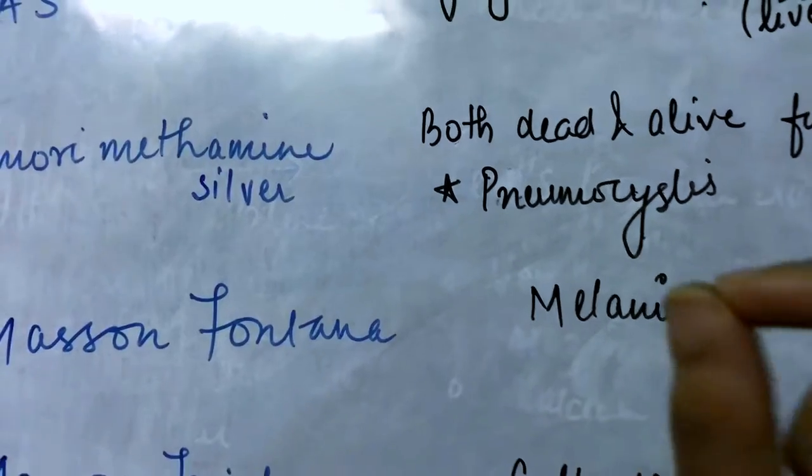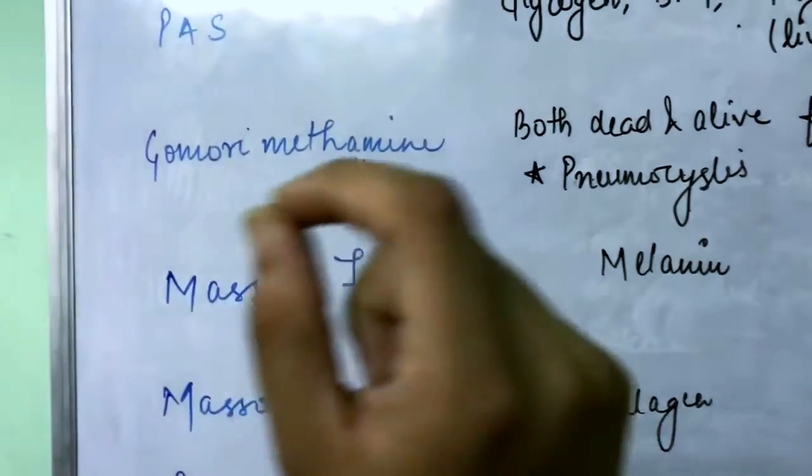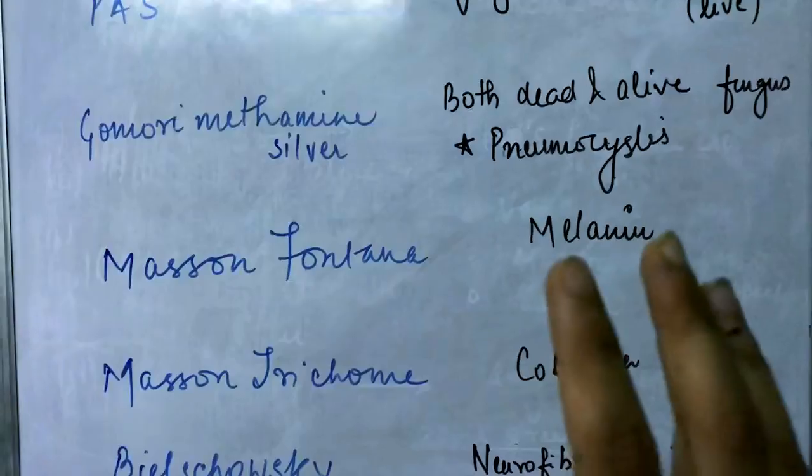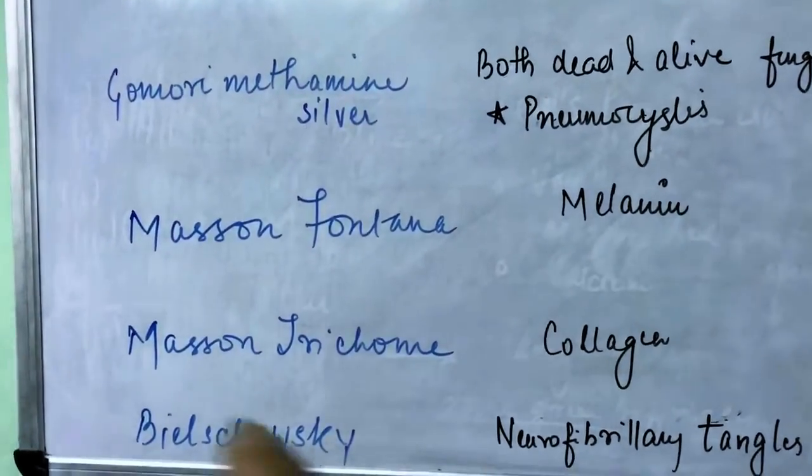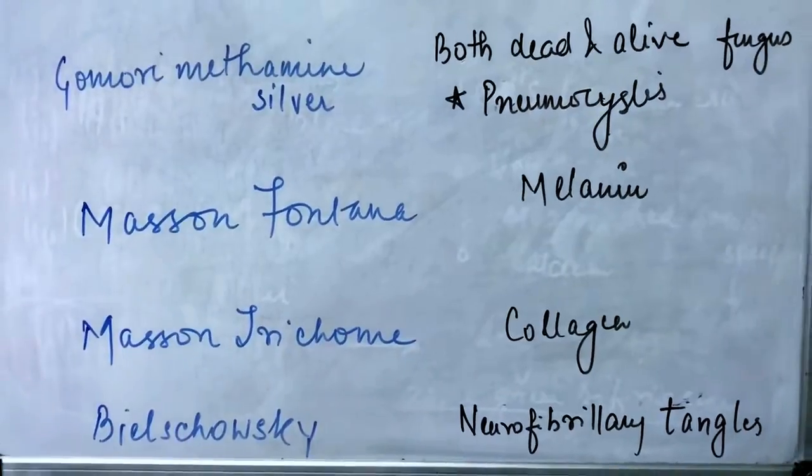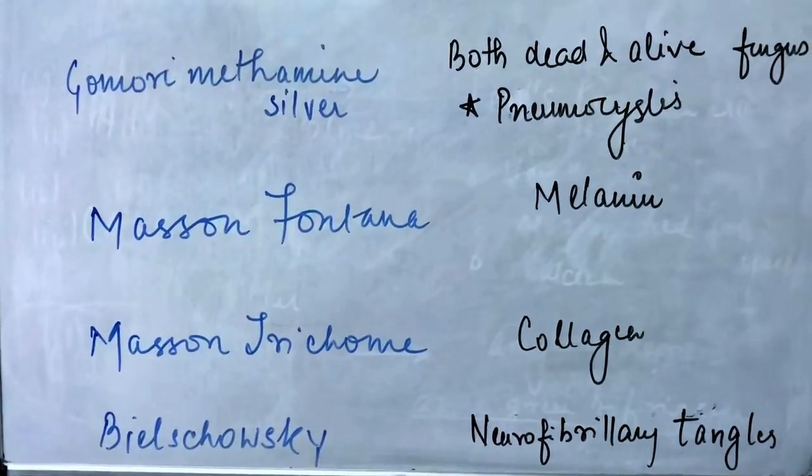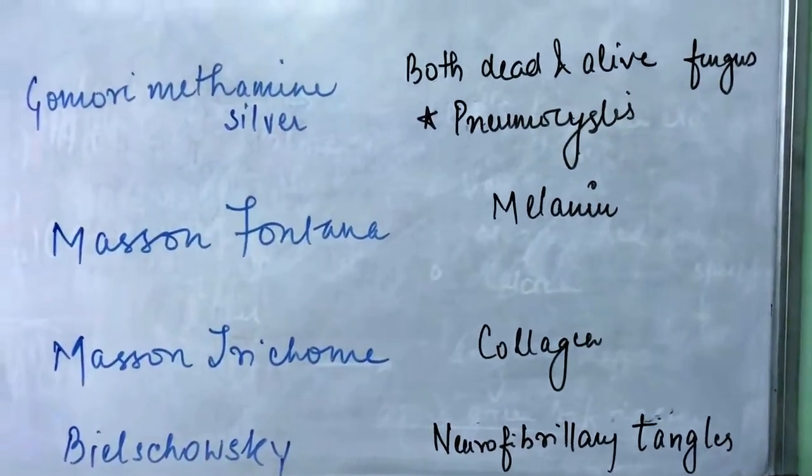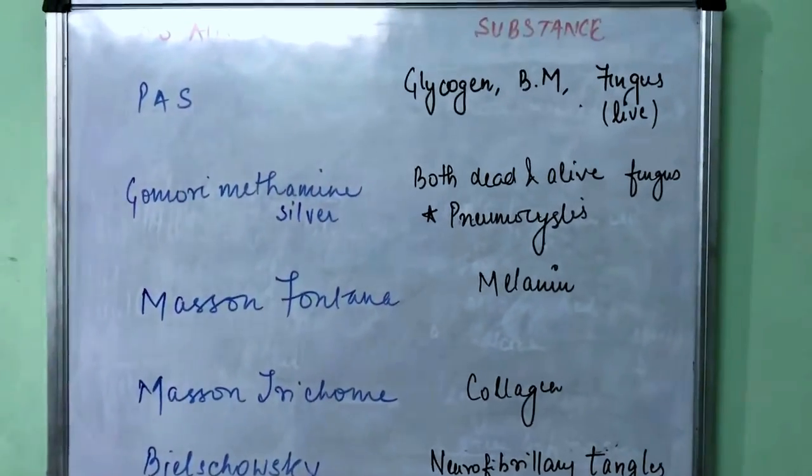Now Masson-Fontana can be used to stain melanin in tissues, while Masson trichrome can be used to stain collagen. And one more important stain is Bielschowsky stain, which can be used to stain neurofibrillary tangles. So these are the important stains that you need to remember for entrance examinations, which can be asked, have been asked, and are very high-yield material for entrance examinations.